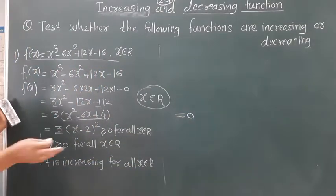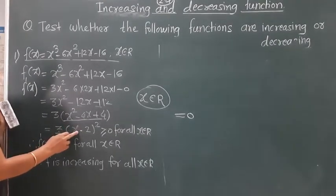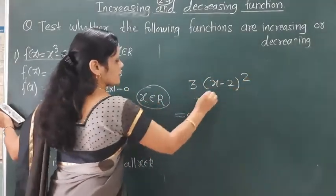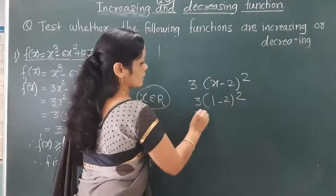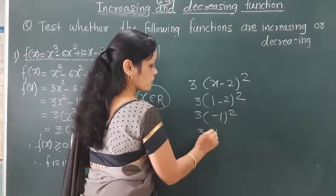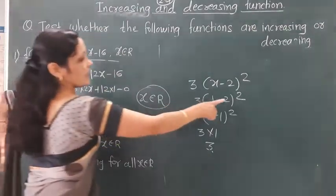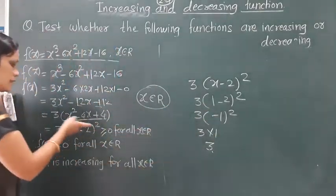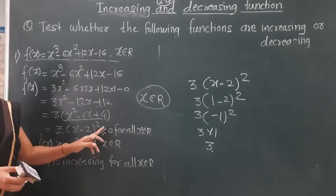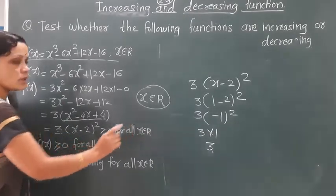We can rewrite f'(x) as 3(x² - 4x + 4), which factors as 3(x - 2)². Since (x - 2)² is a perfect square — using the identity (a - b)² = a² - 2ab + b² — it is always greater than or equal to 0 for all x belonging to R.